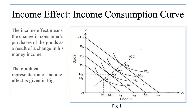As a result, the budget line will shift upward and will be parallel to the original budget line P1L1. Let us assume that the consumer's money income increases by such an amount that the new budget line is P2L2. The consumer's income has increased by L1L2 in terms of X or P1P2 in terms of Y. With budget line P2L2, the consumer is in equilibrium at Q2 on indifference curve IC2, having OM2 of X and ON2 of Y. Thus, as a result of the increase in his income, the consumer buys more quantity of both the goods.